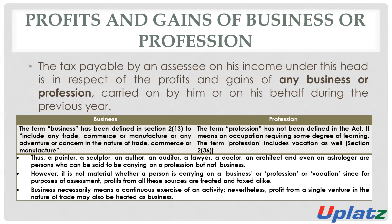Business includes trade, commerce, manufacturing or any adventure, and profession includes vocation. If there is any lawyer who earns income by any case or proceeding, then such income will be taxable under the head of PGBP because he is a professional earning income from his profession. A painter, doctor, auditor, lawyer, architect, astrologer — these all are considered as professionals and their activities will be considered as profession, not as business.